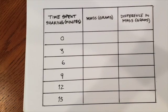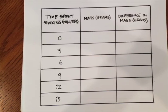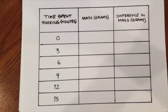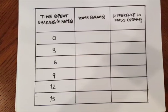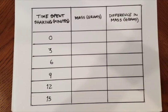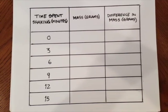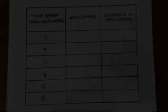To record your data, you'll need a data table like this one, with time intervals of 3 minutes from 0 to 15, a place to record mass of the rocks in grams, and a place to record the difference in mass.